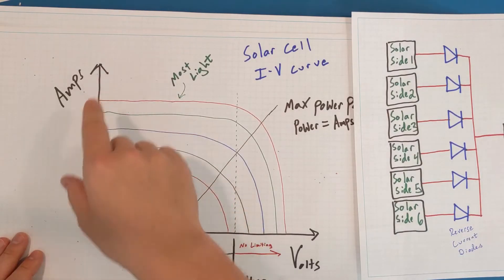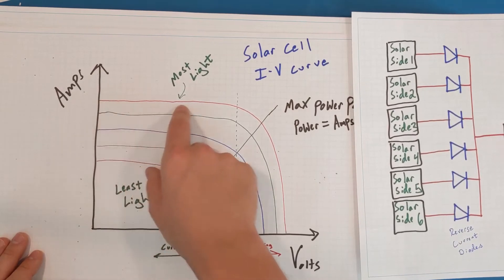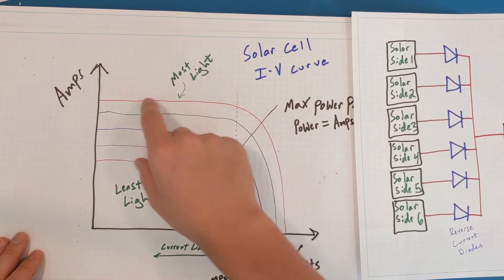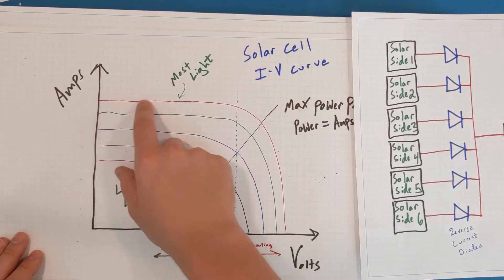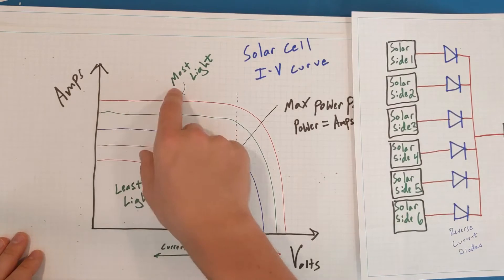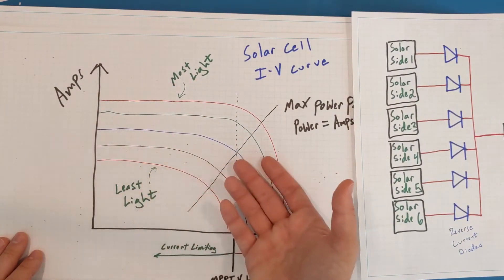What I have drawn here is a basic amps versus volts graph of different curves of a solar cell under different varying light conditions, where you can see it's outputting the most amps and the most volts under the highest light condition, and under less light, it's outputting less.